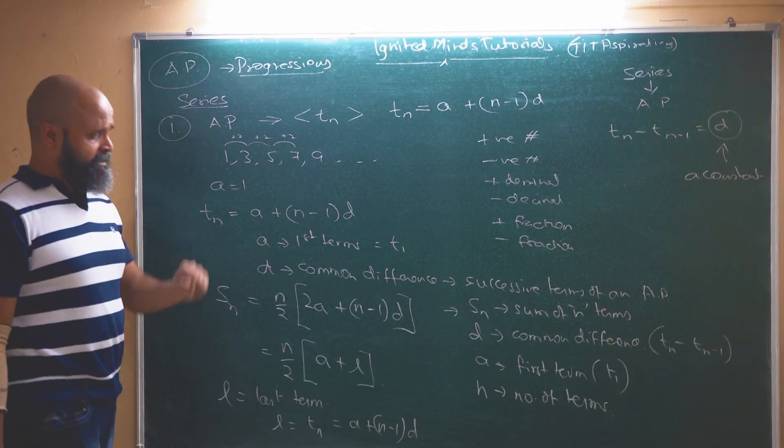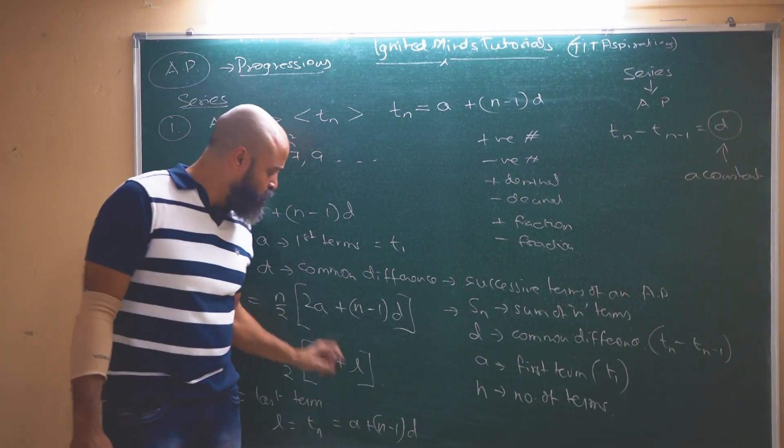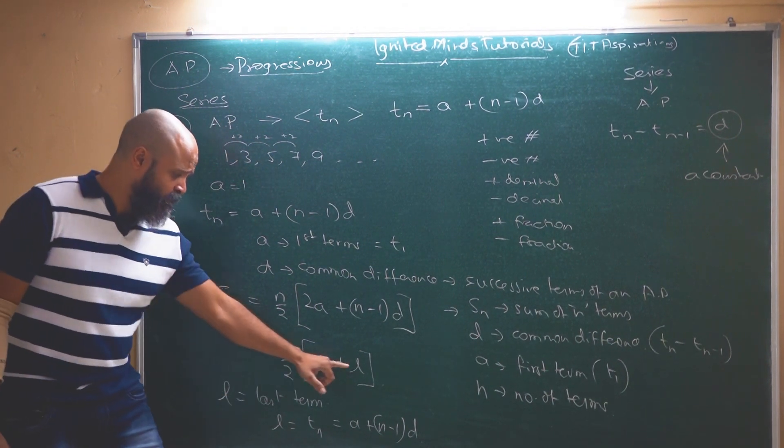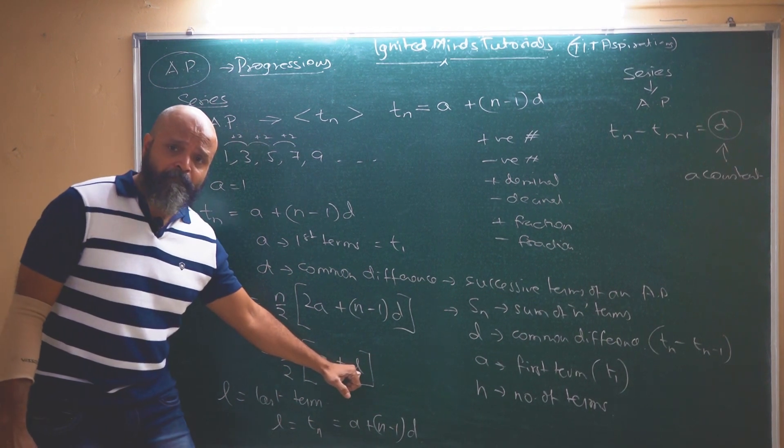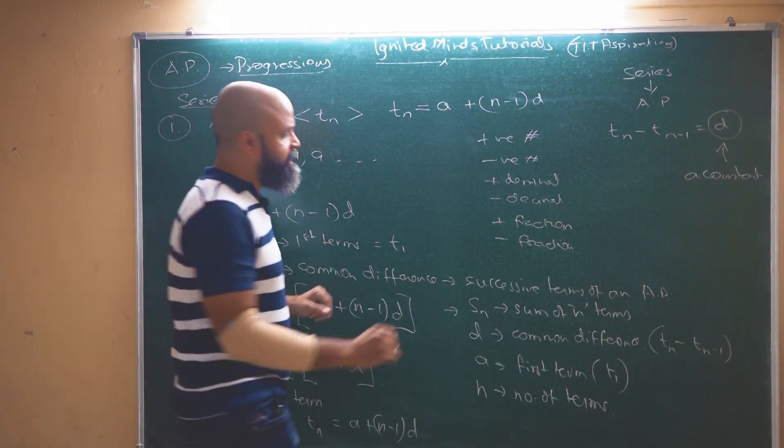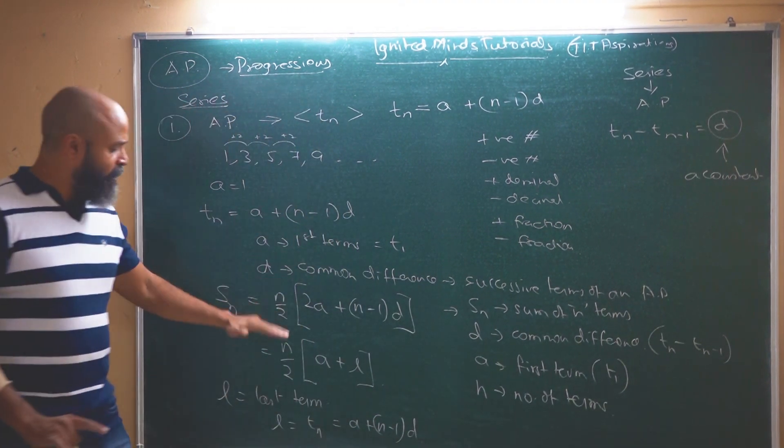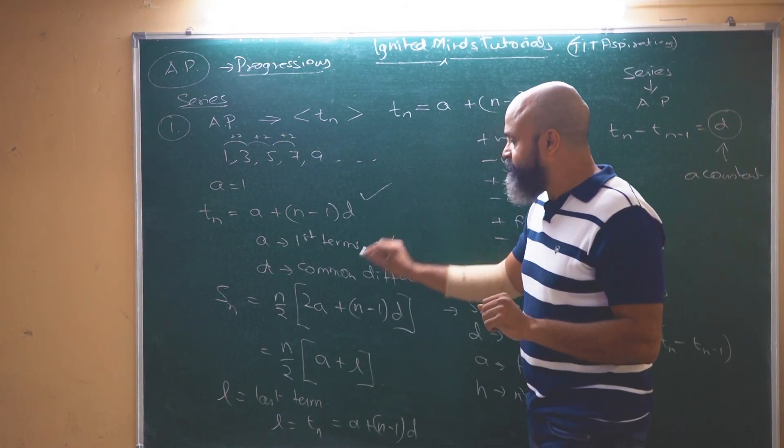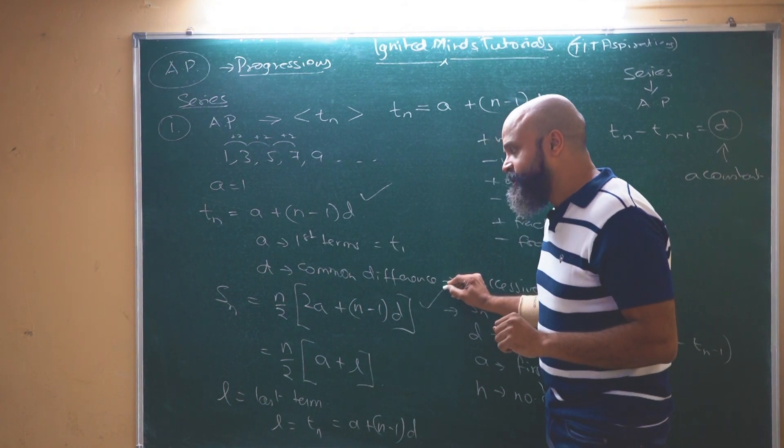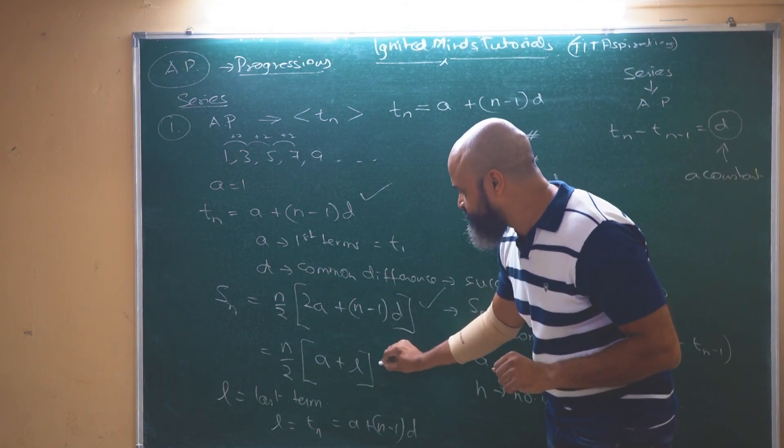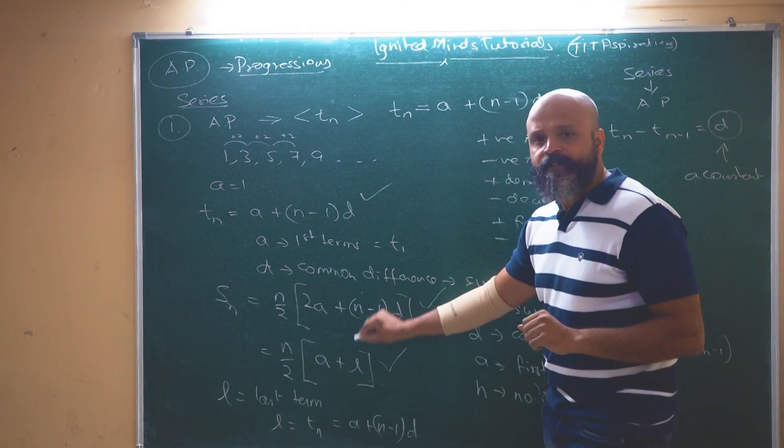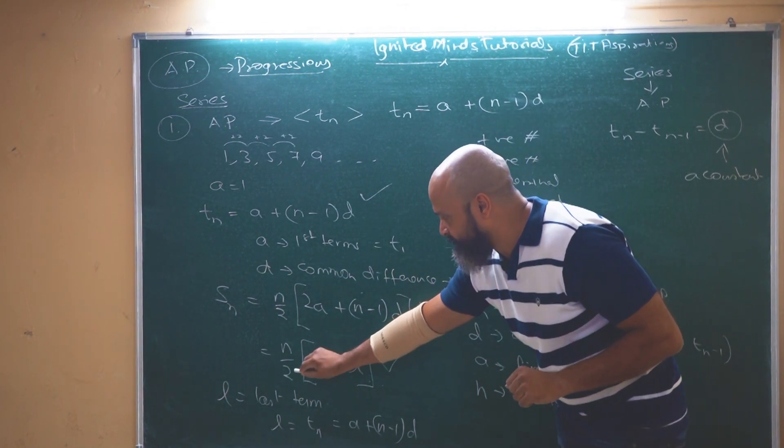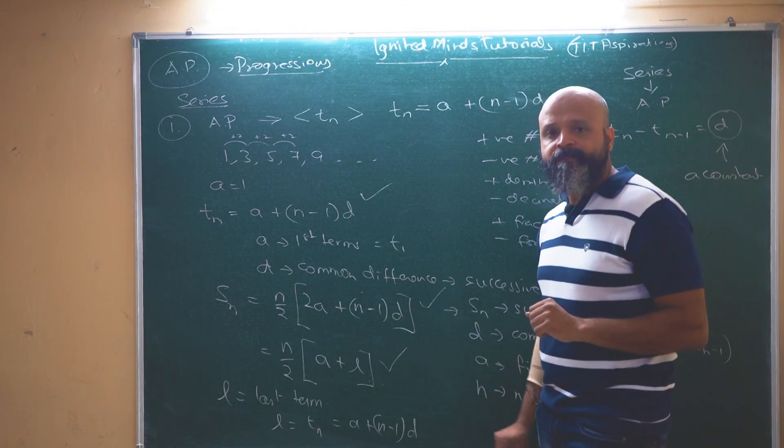So if in a series the last term is known to us and we know how many terms it is of, then we can also represent this as n by 2 into a plus l. So we have basically three main formulas for AP. The first one is the nth term, the second one is the sum of n terms, and in order to represent the sum of n terms we have two basic formulas: n by 2 into 2a plus n minus 1 into d and the other one will be n by 2 into a plus l.